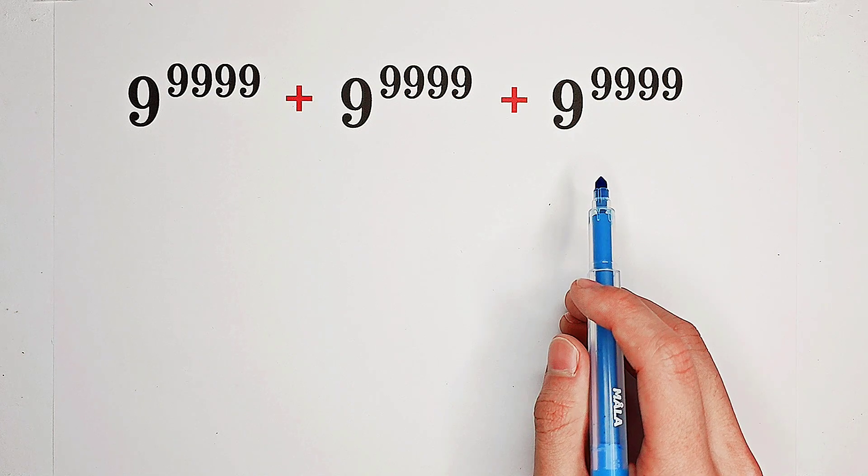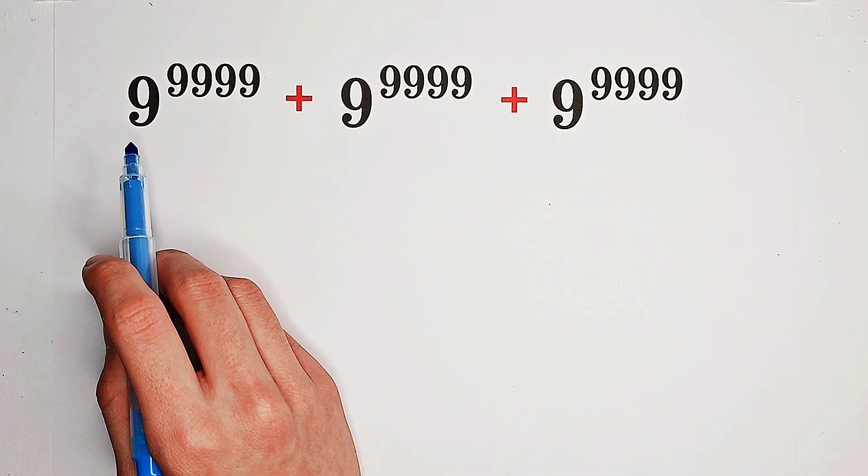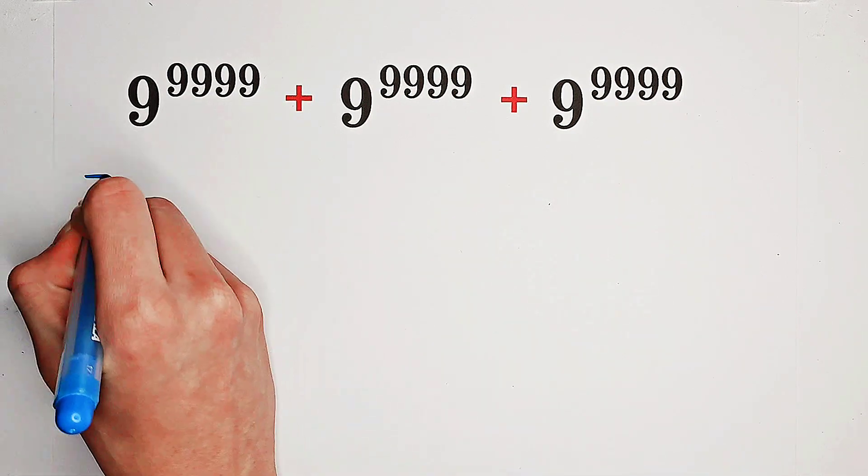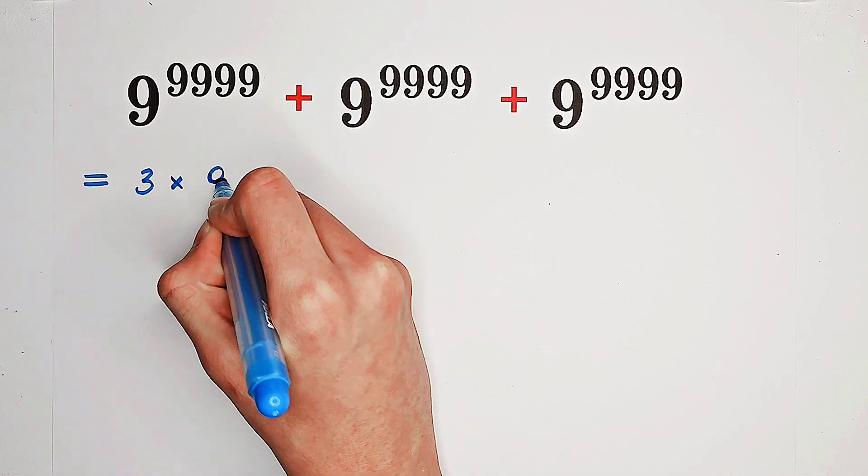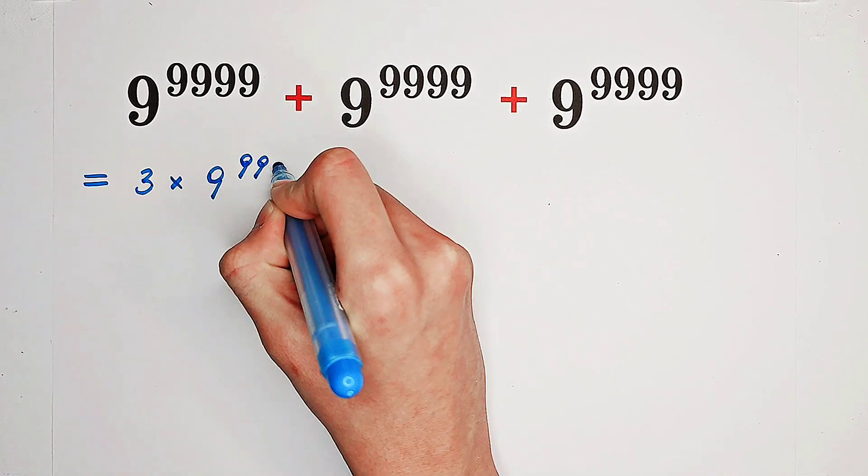Firstly, we see 3 times 9 to the power of 9,999. So we can simplify it. It is just 3 times 9 to the power of 9,999.